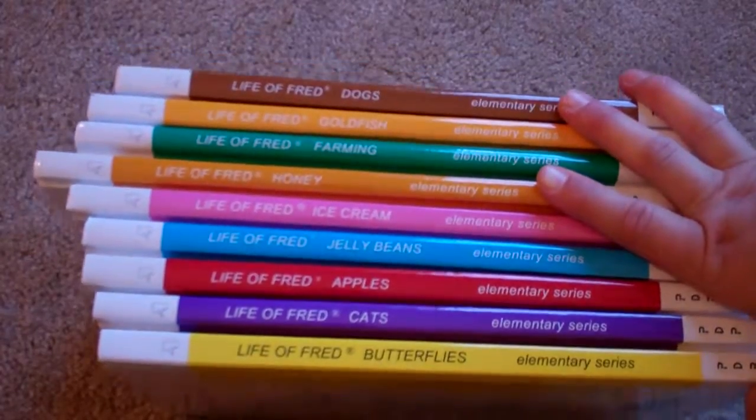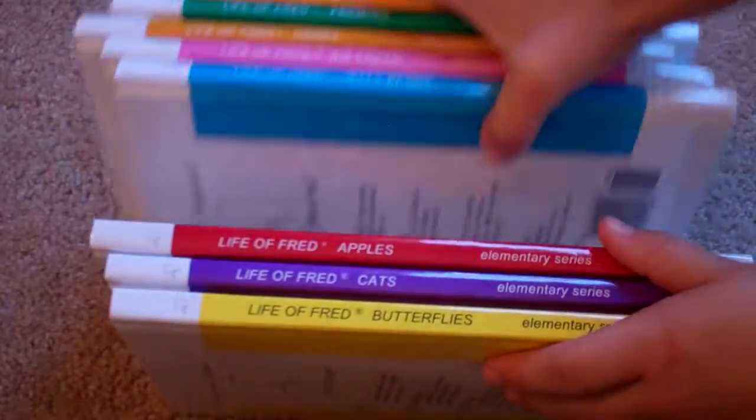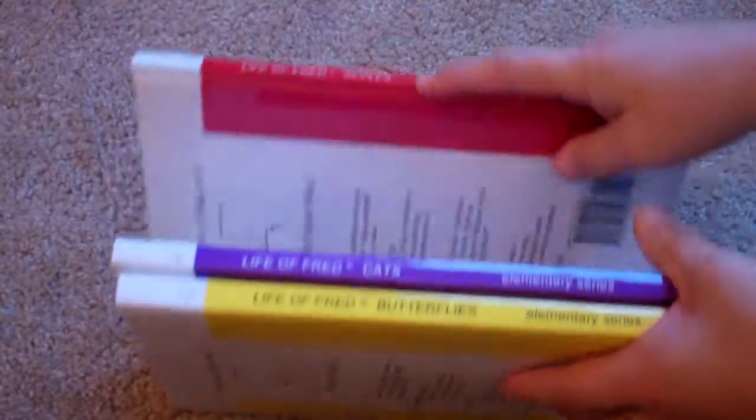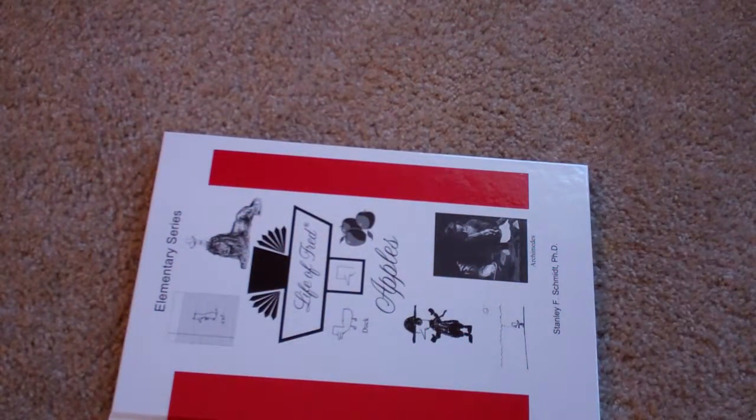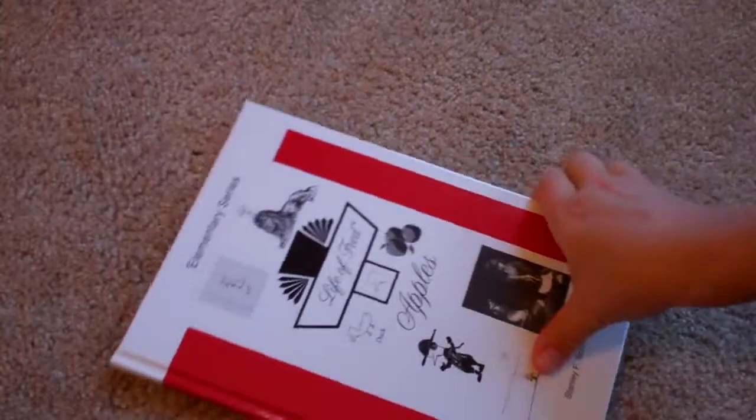and I'll just show you one, each book, one at a time. We're reading these right now. We are in either Edgewood or Farmer. We're probably in Edgewood because I'm not seeing that one in here.